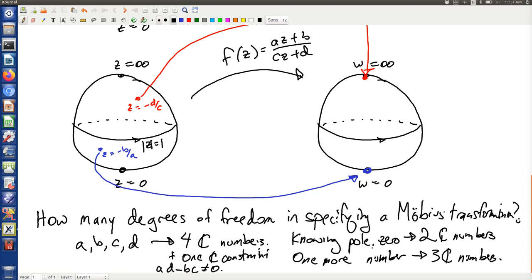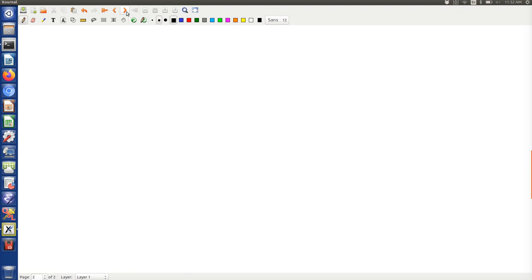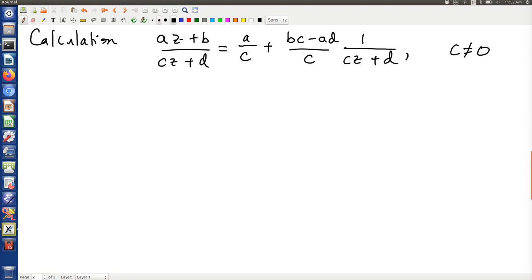Now in order to kind of see that this picture makes sense, it's useful to do a calculation. And this calculation is kind of best seen backwards. The calculation is that if I write az + b over cz + d, that's actually equal to this expression, assuming c is not equal to zero. Now you might say, gosh, what is this?